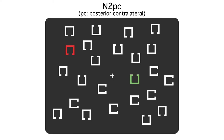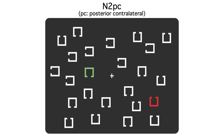Most experiments use much more controlled stimuli. In this task, subjects attend to the red square in some trial blocks and to the green square in others. The task is to report whether the gap in the attended square is on the bottom or on the top. The stimulus locations are randomized from trial to trial, so when the display appears, the subject has to search for the target. We're studying covert attention here, so we have subjects keep their eyes locked on the central fixation point and use their peripheral vision to do the task.